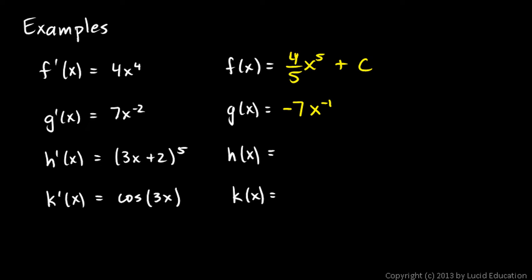Okay, a similar thought process will get us h'(x). 3x + 2 to the 5th, the derivative is going to be something like (3x + 2)^6. Okay, now let's take the derivative of this and see if we get that. Okay, the derivative of this, I'm going to come down here and scribble, would be 6 times (3x + 2)^5 times 3. Remember the chain rule, the derivative of the inner function. So this is 18(3x + 2)^5.